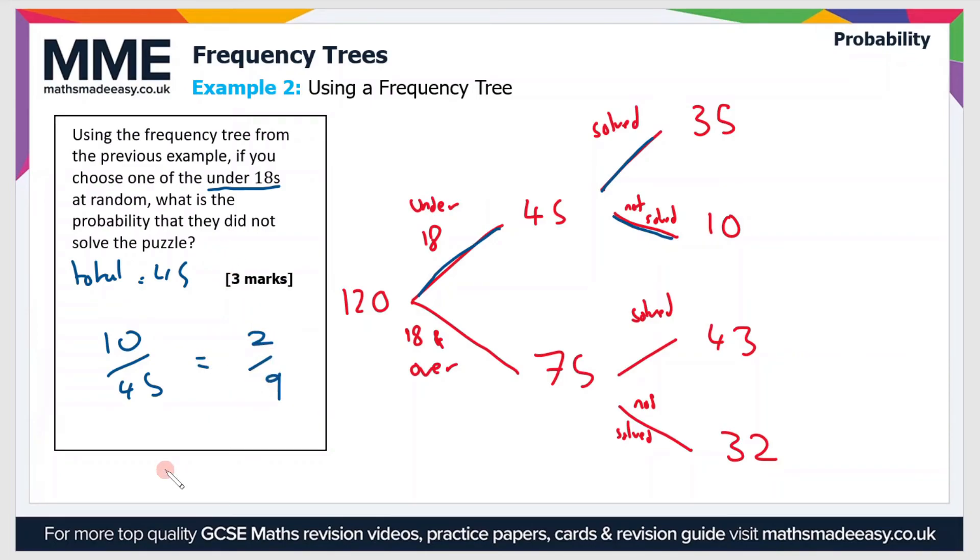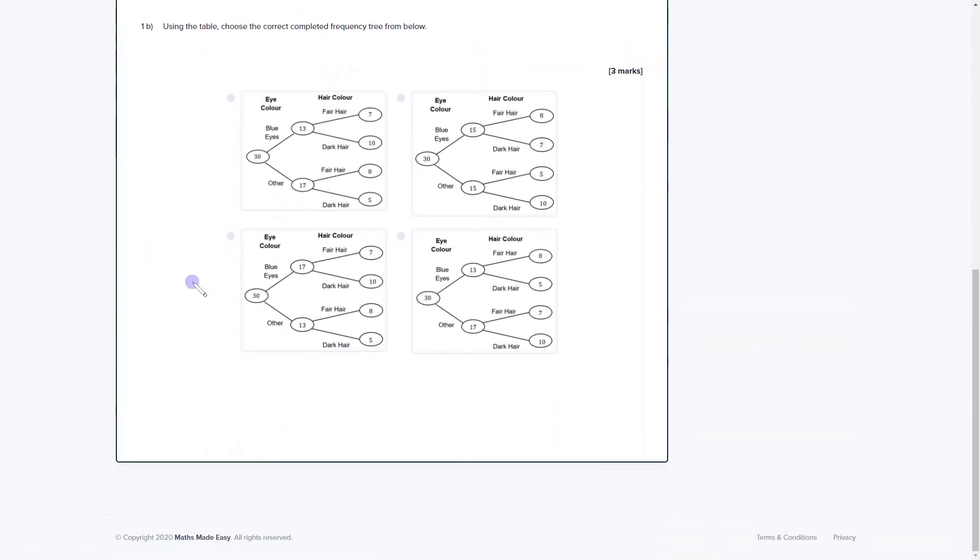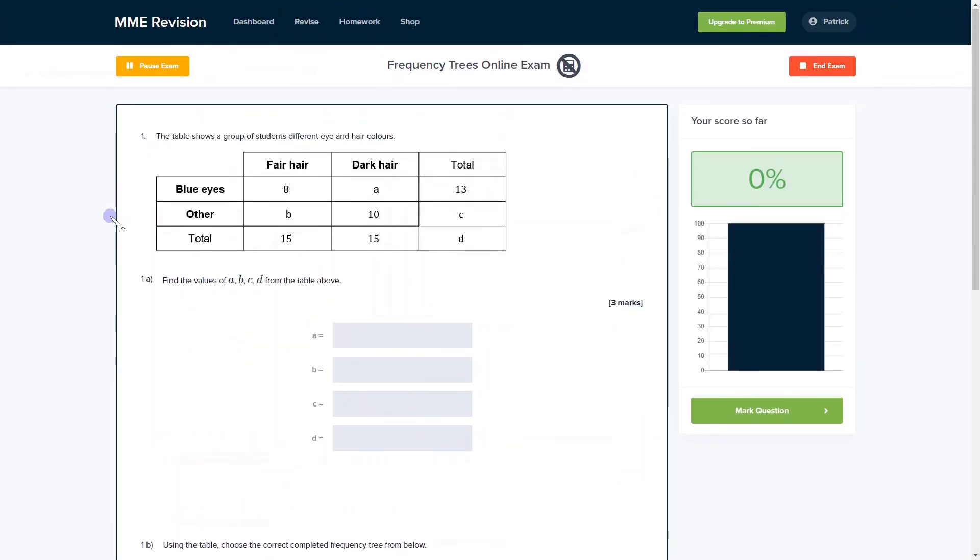So if you want to get some practice with frequency trees exam-style questions, then why not have a go at our online exam? It's available through our Envision platform, and if you take the test you'll find loads of different questions to have a go at, a variety of different question types, and you get instant feedback on all of it. So you can keep track of your progress, find out where you need to improve, and you'll see the worked solutions for all of the questions. So if you're interested, then click the link below; it will take you straight over there.